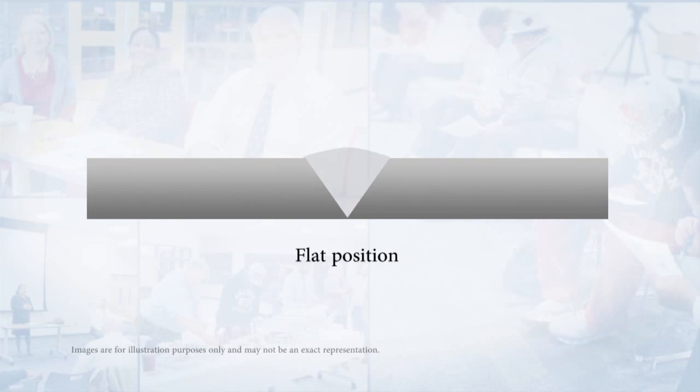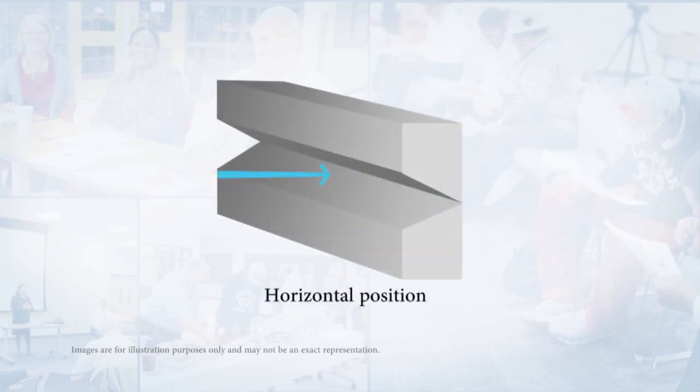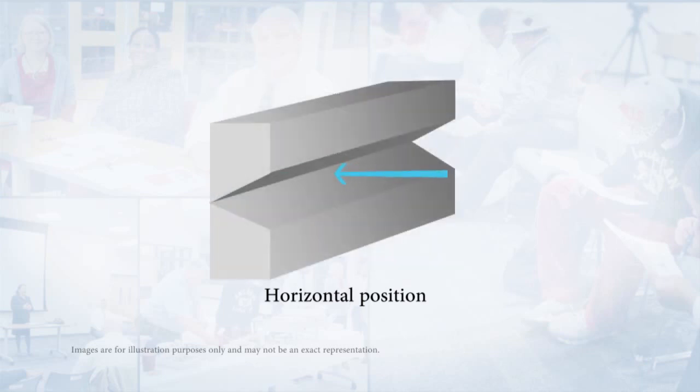In the case of a flat weld like this, if we go from the center of the face down through the root it's pointing down at the ground, that makes it flat. For our horizontal welds we're pointing off to the side and it can be either side, but if it's pointing to the side we're looking at horizontal.